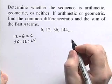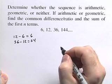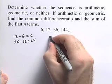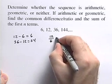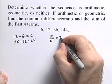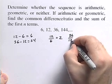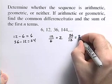So now we'll check to see if it's geometric. We check if a sequence is geometric by looking at the ratio of consecutive terms. So we'll look at 12 divided by 6. 12 divided by 6 is equal to 2. Then we'll check 36 divided by 12. 36 divided by 12 is 3.